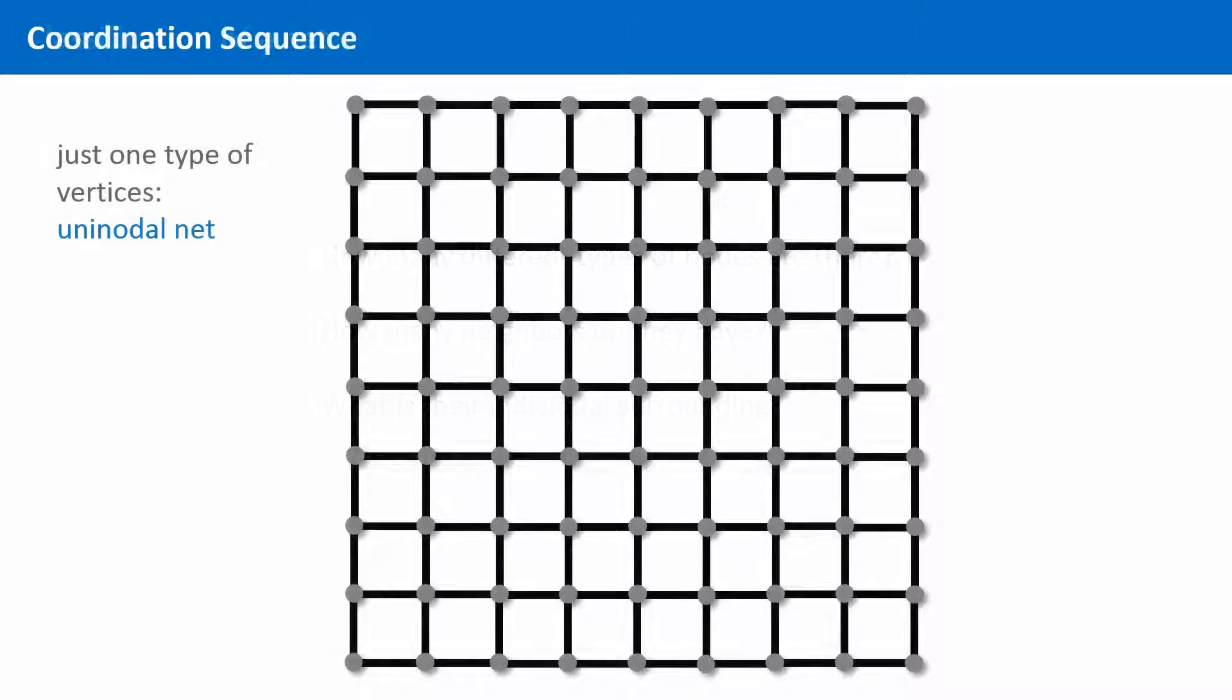For this net, the first question is quite easy to answer. There is only one distinct type of vertex. It is a four-connecting node. That simple.